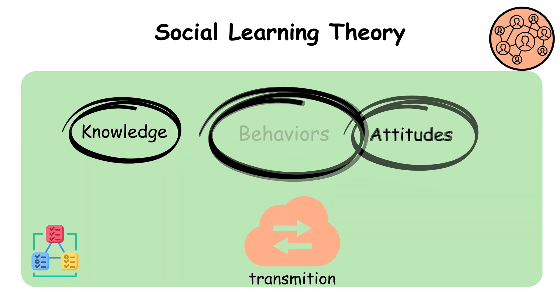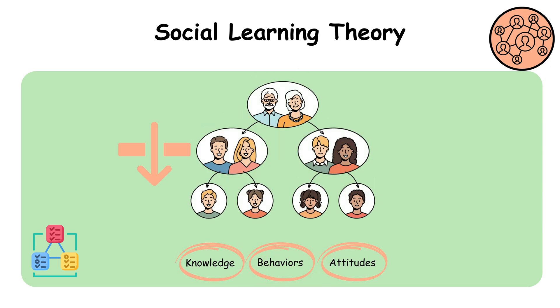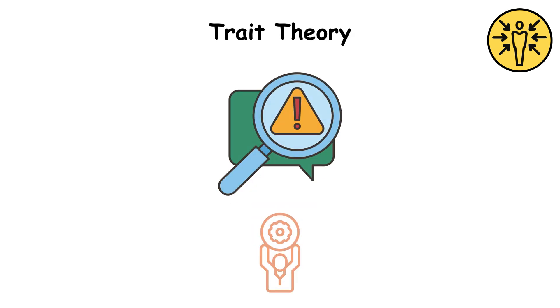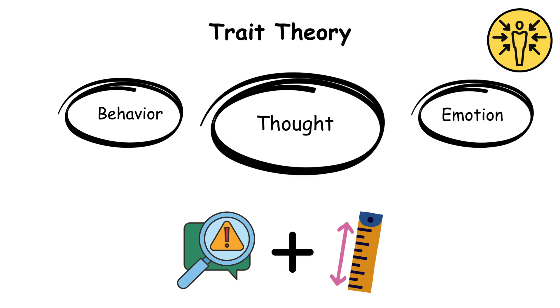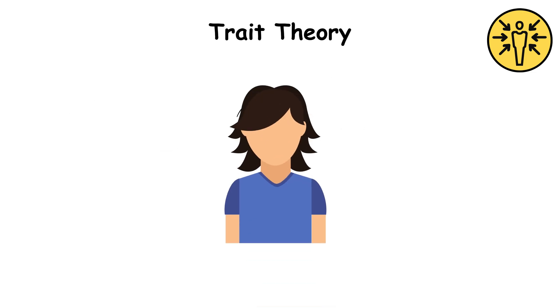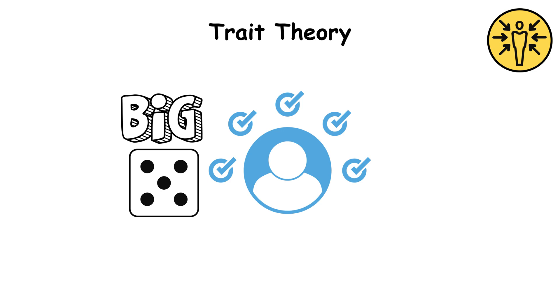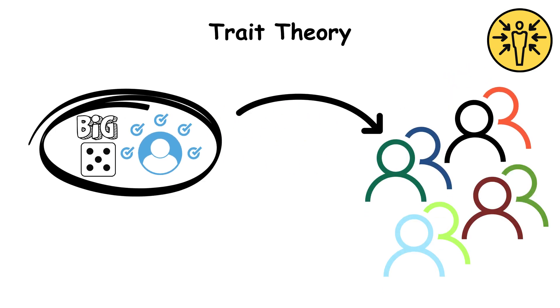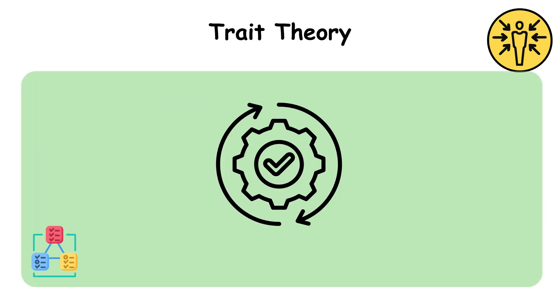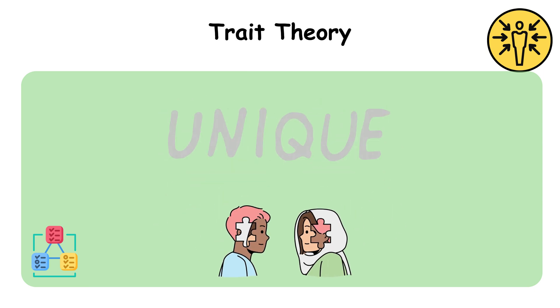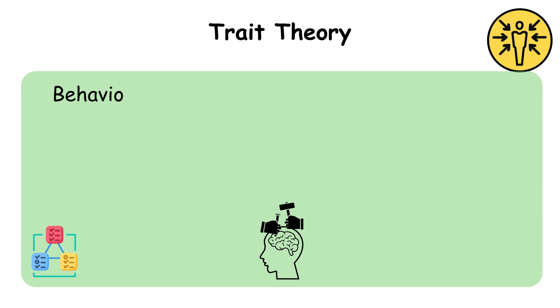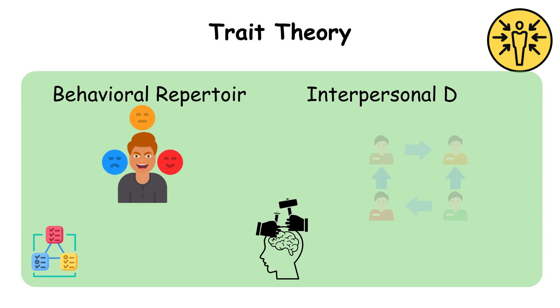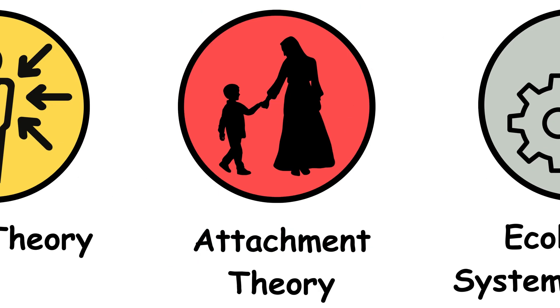The trait theory. Trait theory endeavors to identify and measure the stable patterns of behavior, emotion and thought that characterize individuals. From the big five traits to the myriad dimensions of personality, this framework offers a comprehensive roadmap for understanding the unique configurations of traits that shape an individual's behavioral repertoire and interpersonal dynamics.